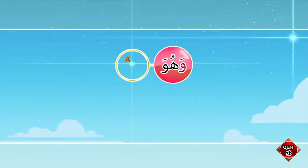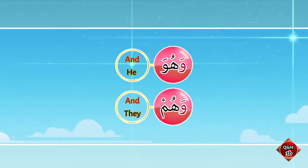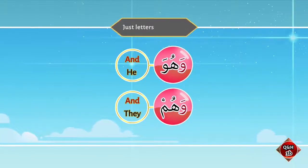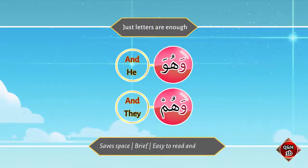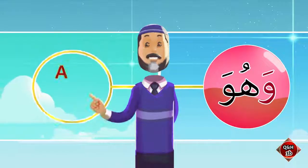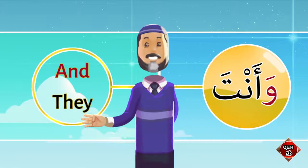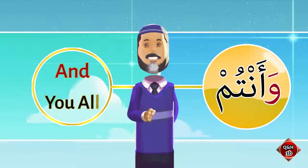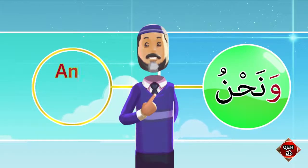'Wahum' means 'and they.' There is no fatha, kasra, or damma in general books — just letters are enough. It saves space, it is brief, it is easy to read and easy to write. Mashallah! So: wahua means 'and he,' wahum means 'and they,' wanta means 'and you,' wantum means 'and you all,' wanna means 'and I,' wannahnu means 'and we.'